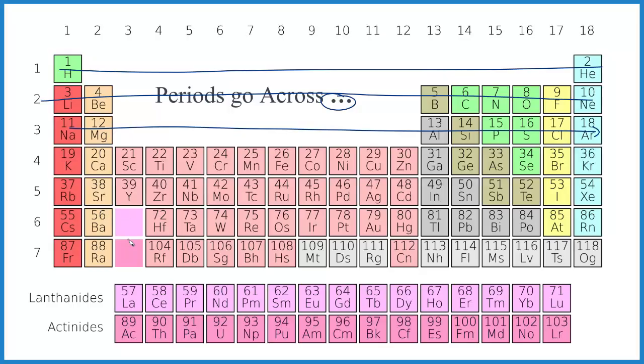And note again, we're going from 56 to 57. So the lanthanides are actually in period six. The actinides, because we go from 88 here to 89, are in period seven.